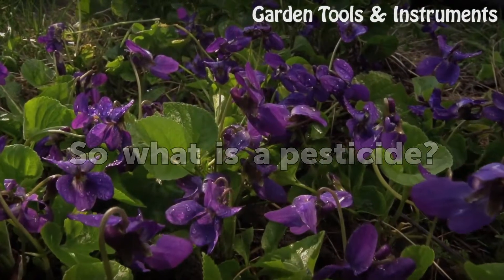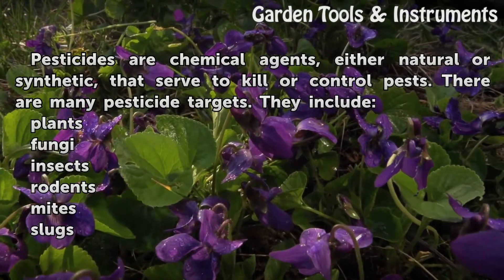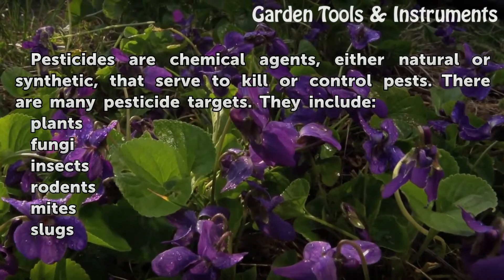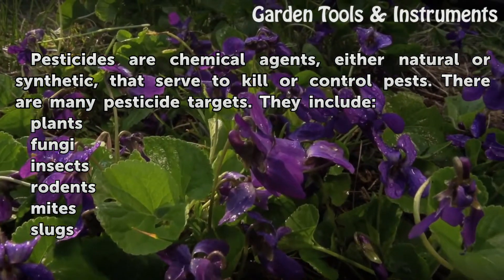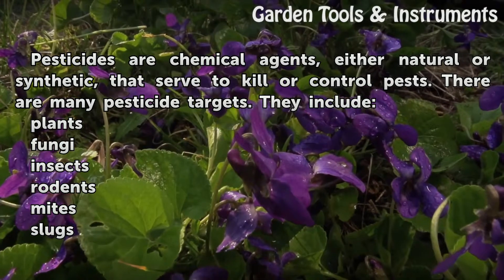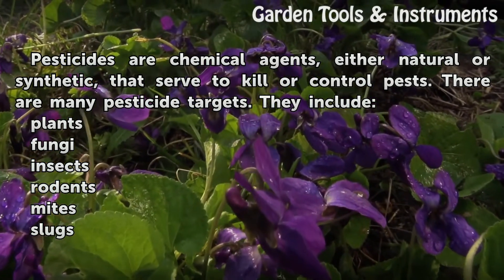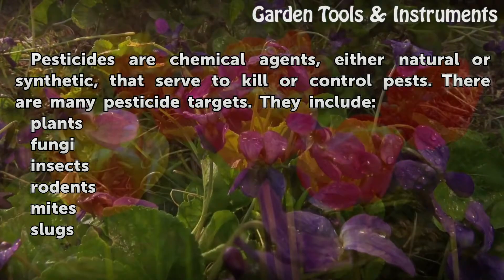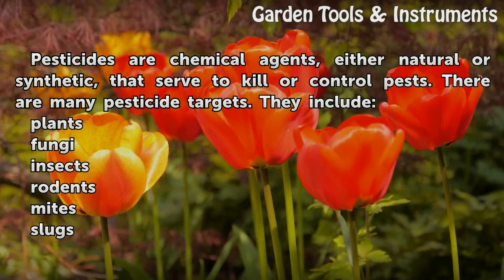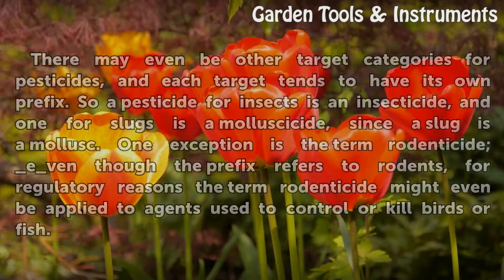So what is a pesticide? Pesticides are chemical agents, either natural or synthetic, that serve to kill or control pests. There are many pesticide targets. They include plants, fungi, insects, rodents, mites, and slugs.